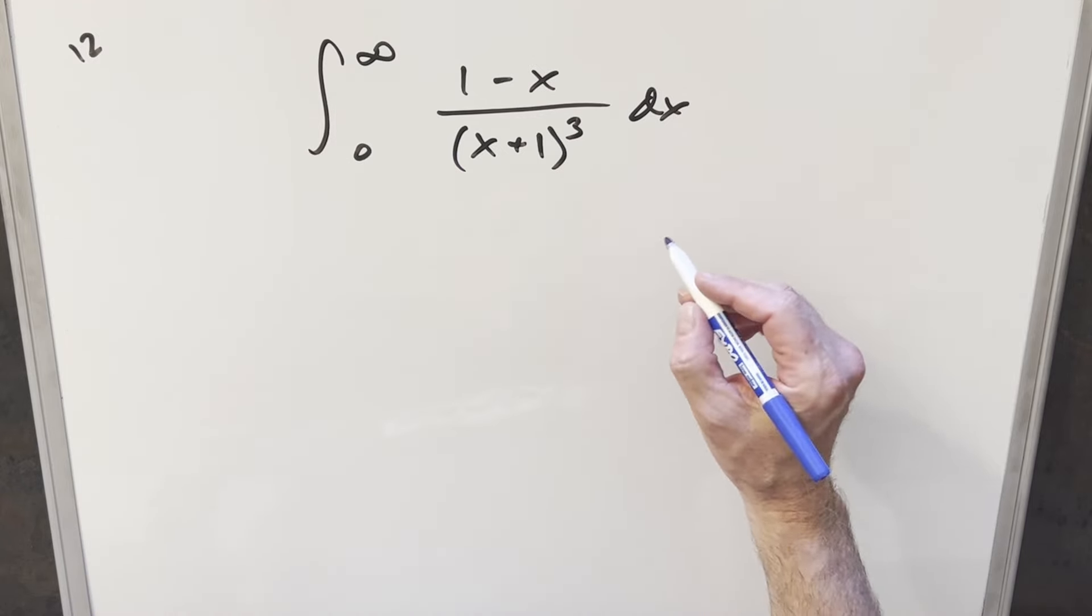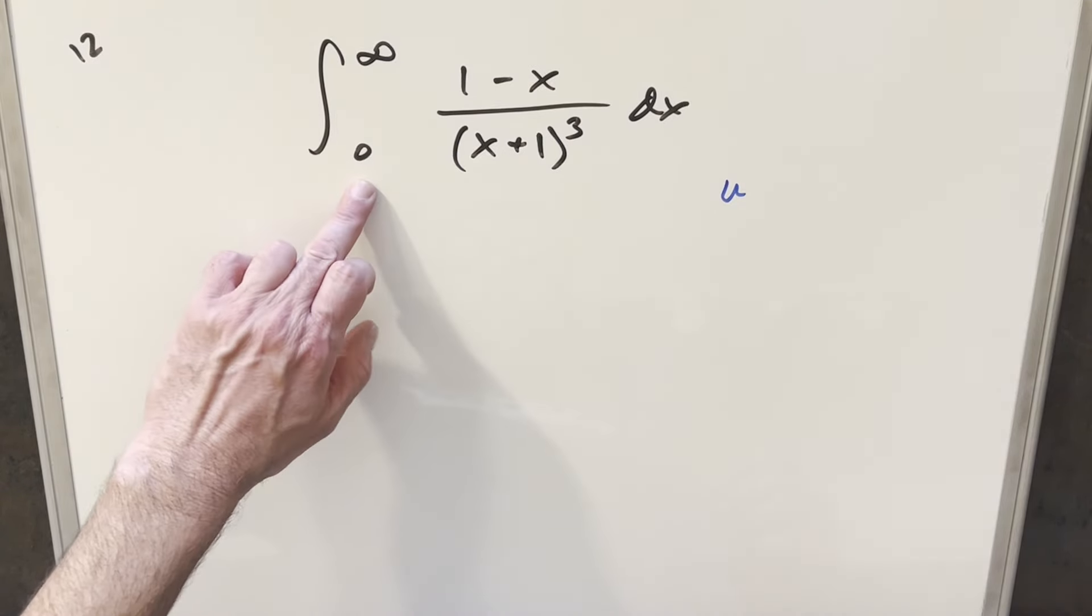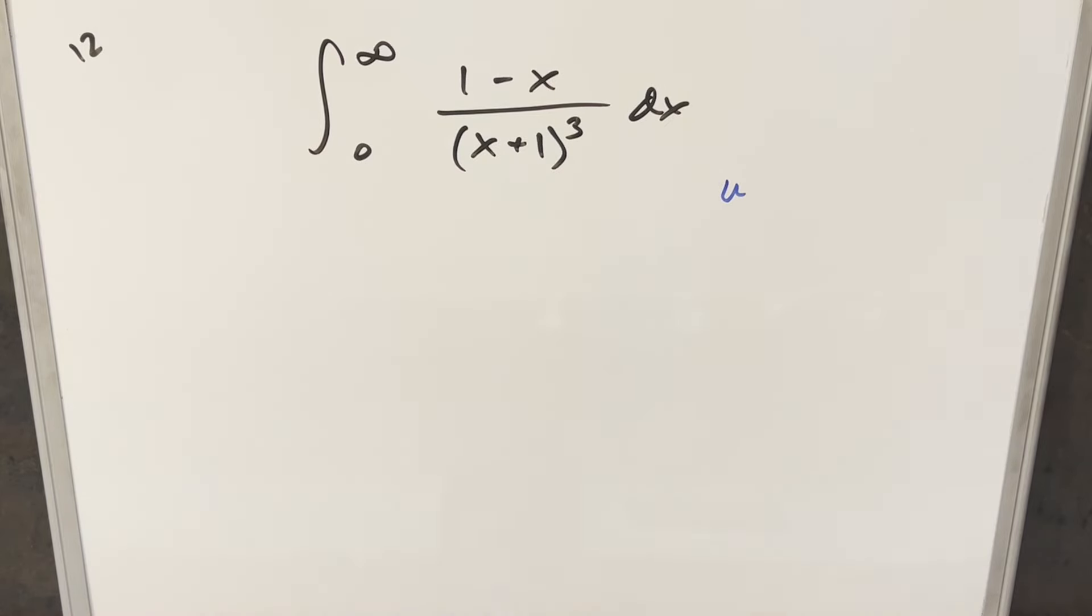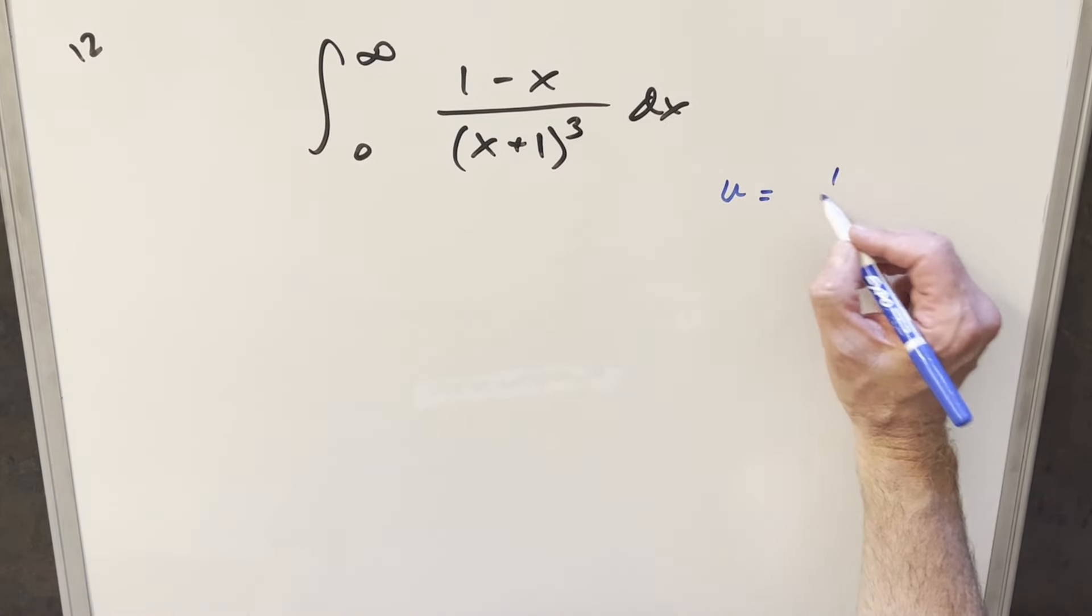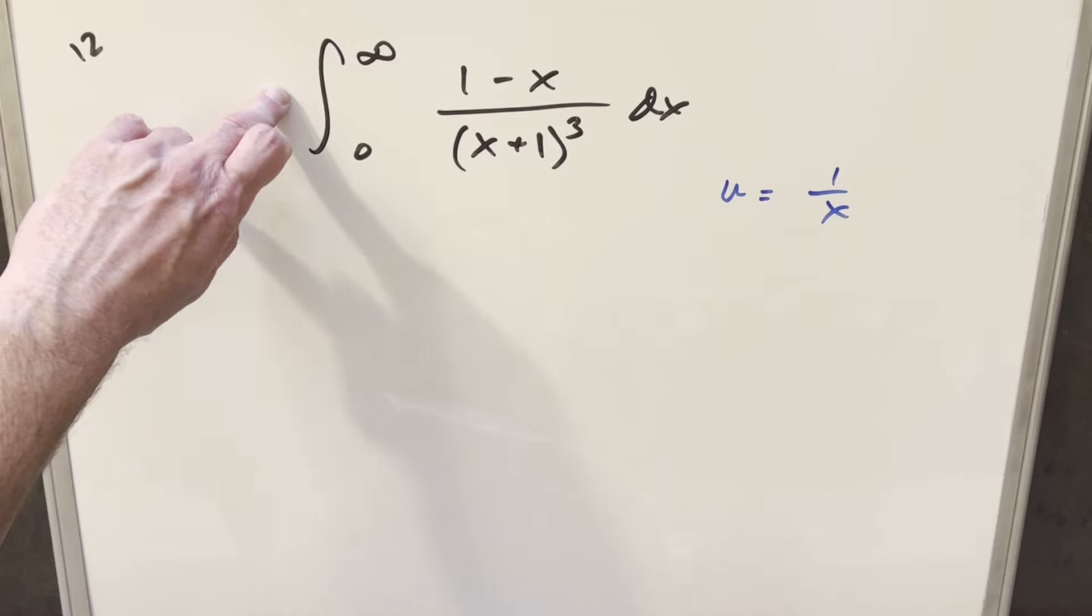So what I want to do is a u substitution. We're going to use the fact that we've got bounds from 0 to infinity. So if I set u equal to 1 over x, it's going to have the effect of basically flipping the bounds.